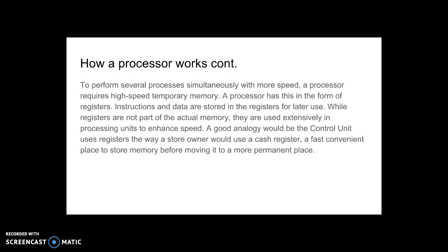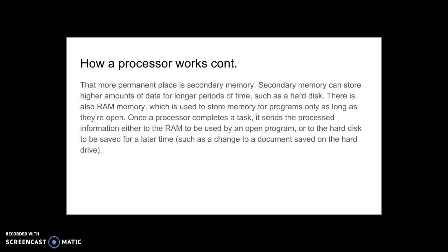To perform several processes simultaneously with more speed, a processor requires high-speed temporary memory. A processor has this in the form of registers. Instructions and data are stored in the registers for later use. While registers are not part of the actual memory, they are used extensively in processing units to enhance speed. A good analogy: the control unit uses registers the way a store owner would use a cash register — a fast, convenient place to store memory before moving it to a more permanent place.